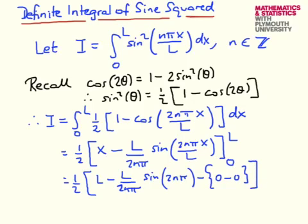And at this stage, we also recall that the sine of 2nπ is 0, because n is an integer. We were told that at the beginning. So for integer n, this will also vanish. So this whole term vanishes, and we're left with a half multiplying by L, so the result for the integral is L divided by 2.